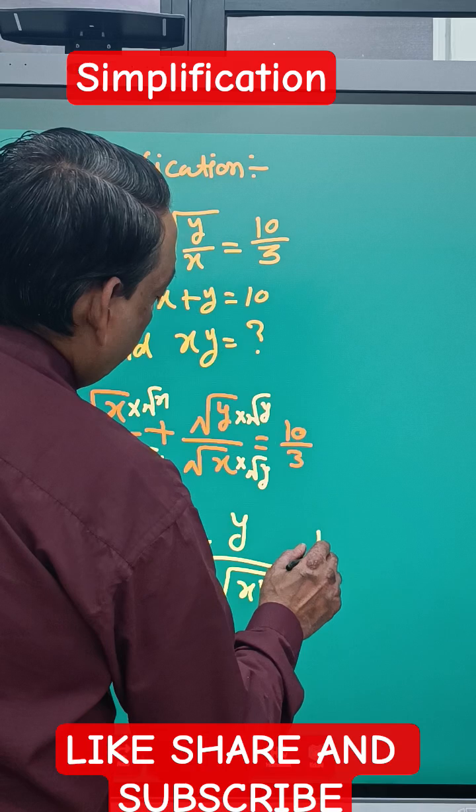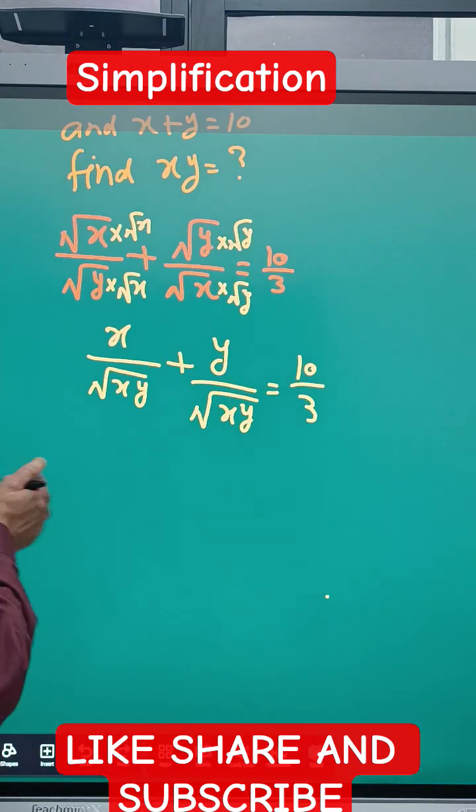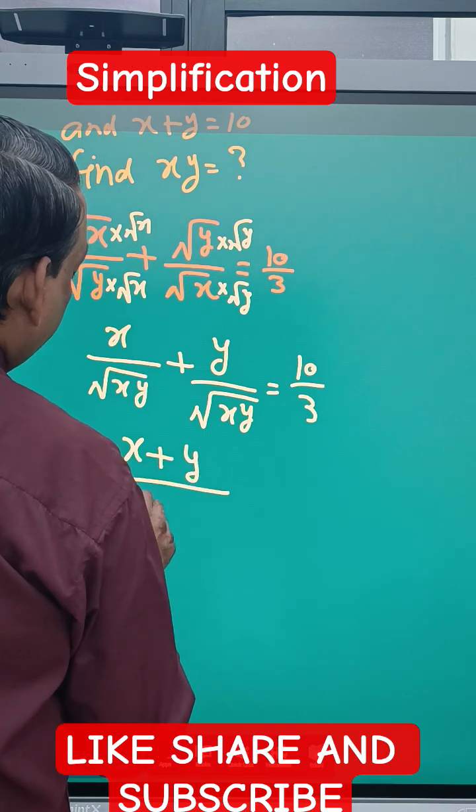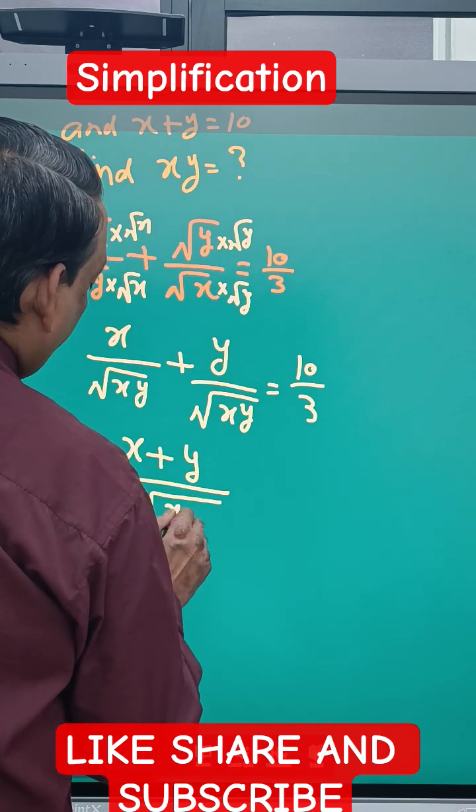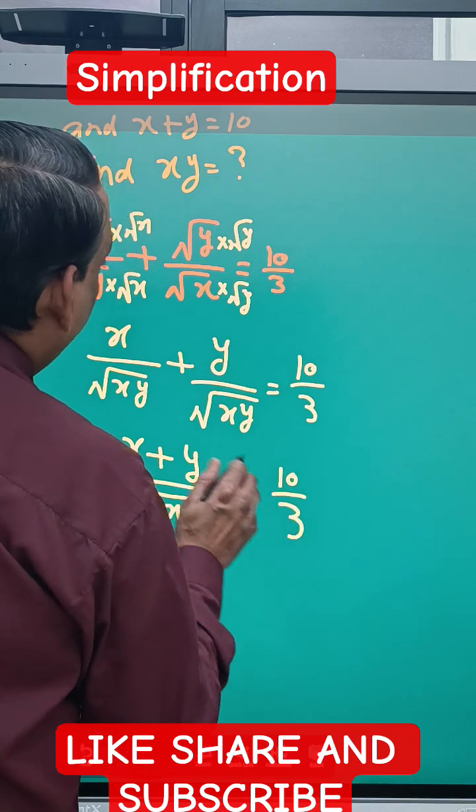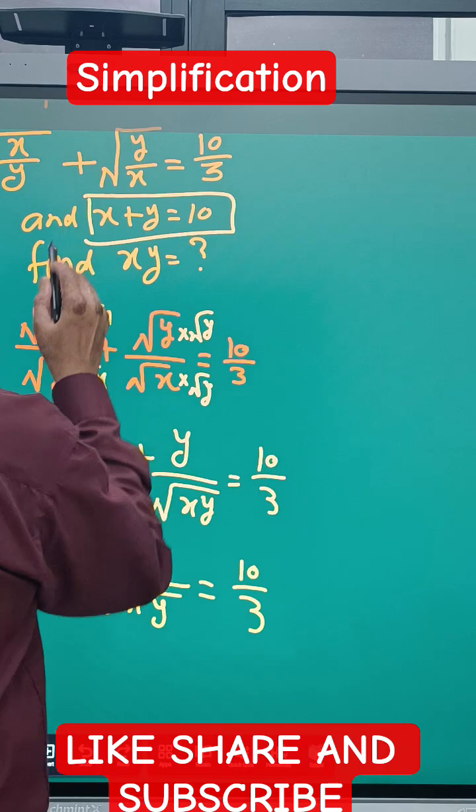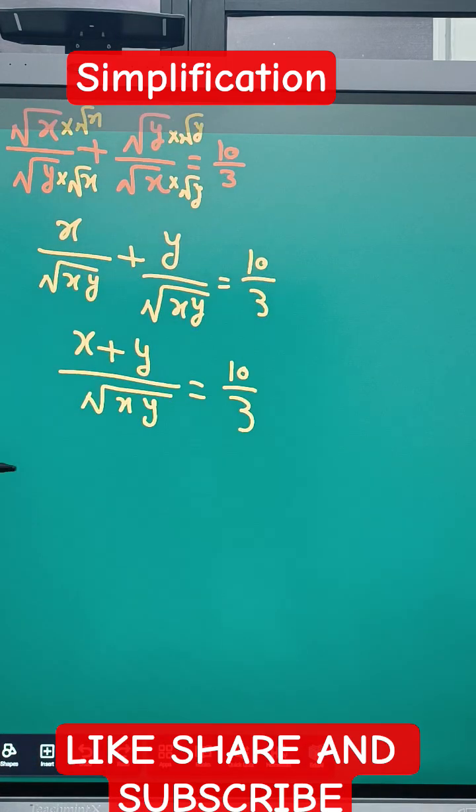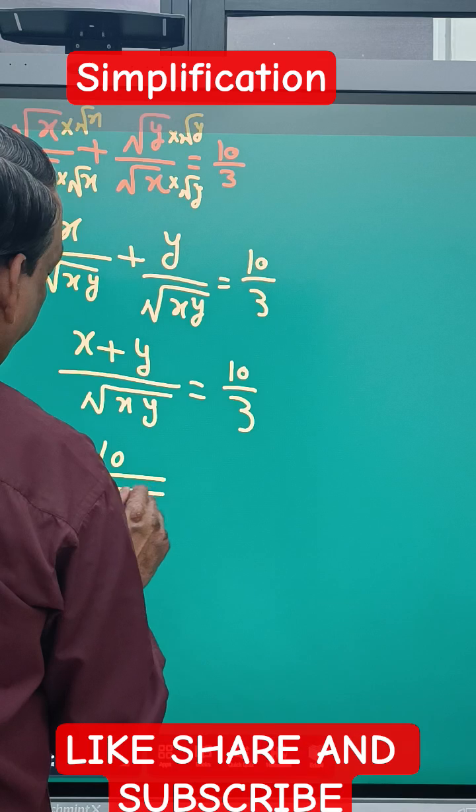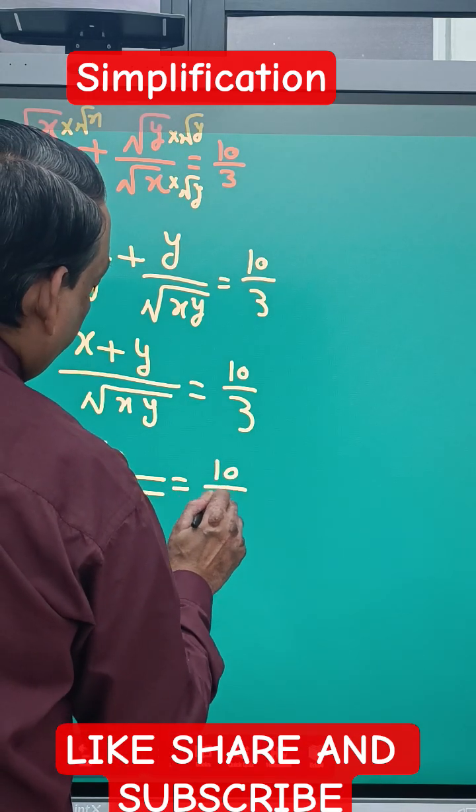We'll add the numerators: (x + y)/√xy = 10/3. We're given that x + y = 10, so substituting: 10/√xy = 10/3. We can cancel the 10s.